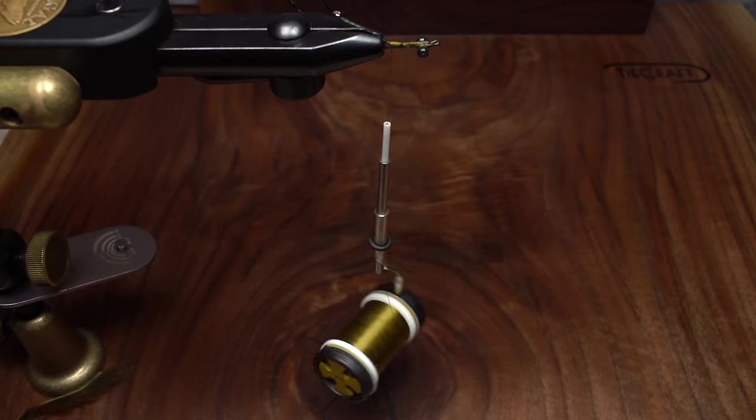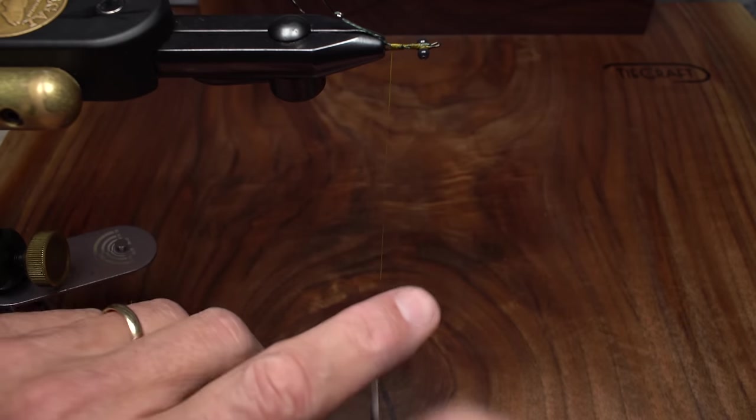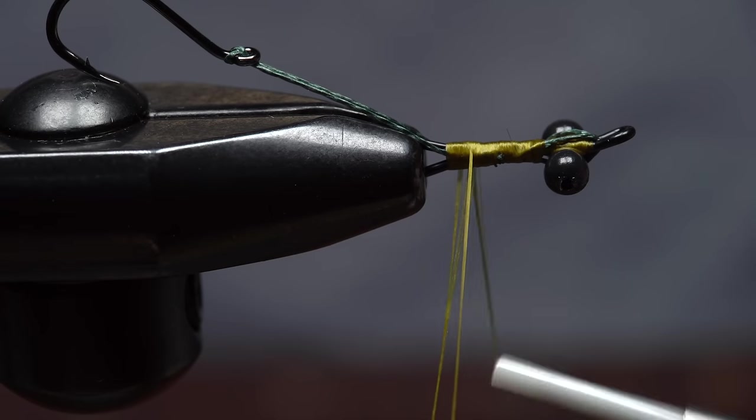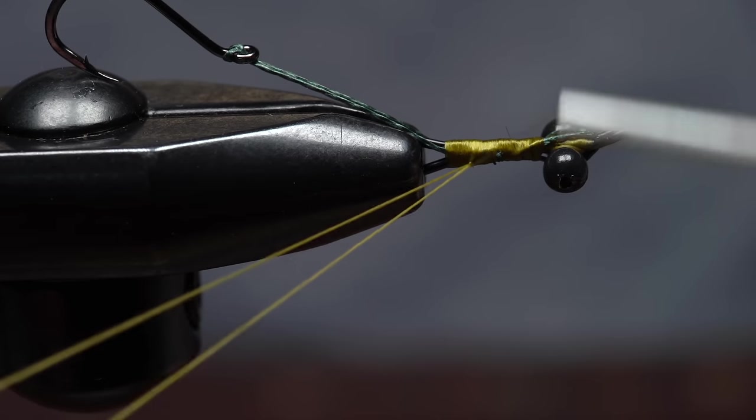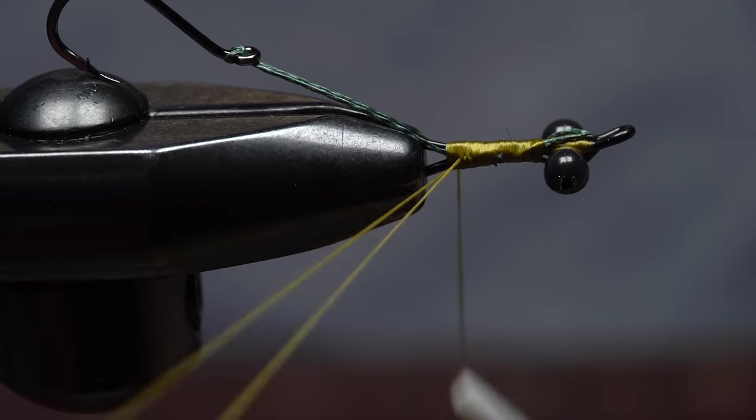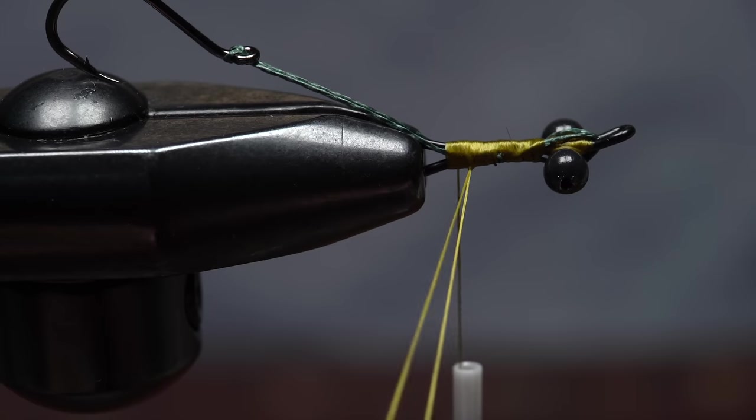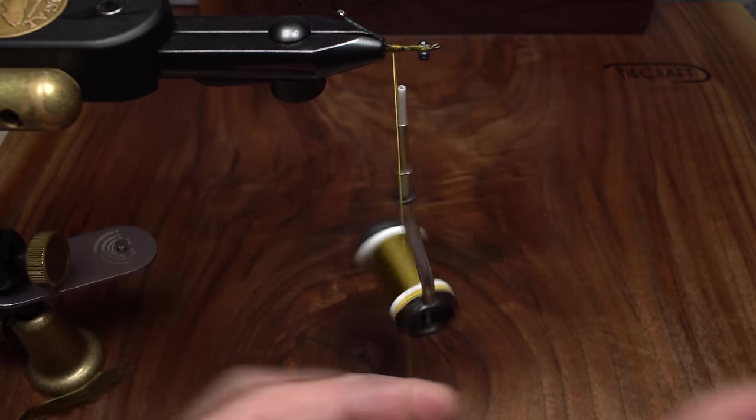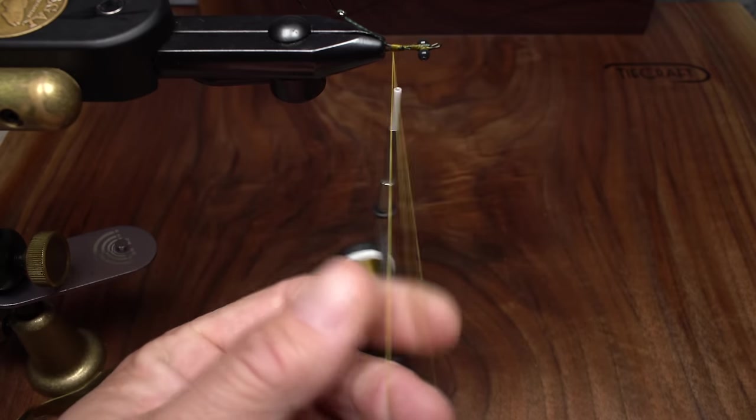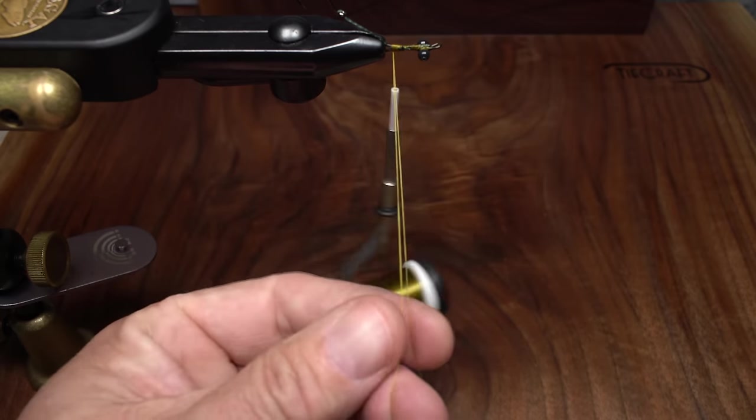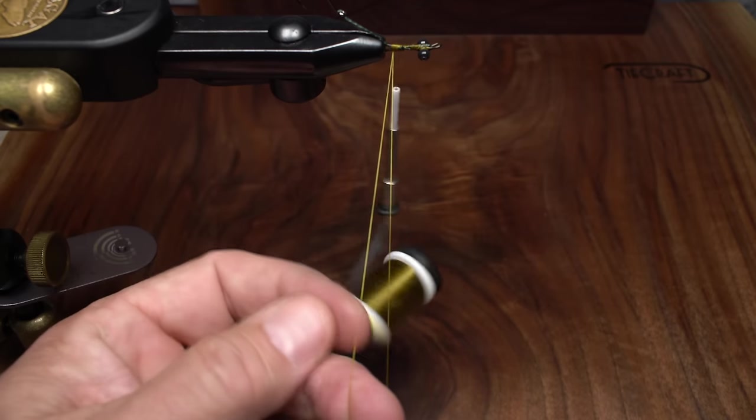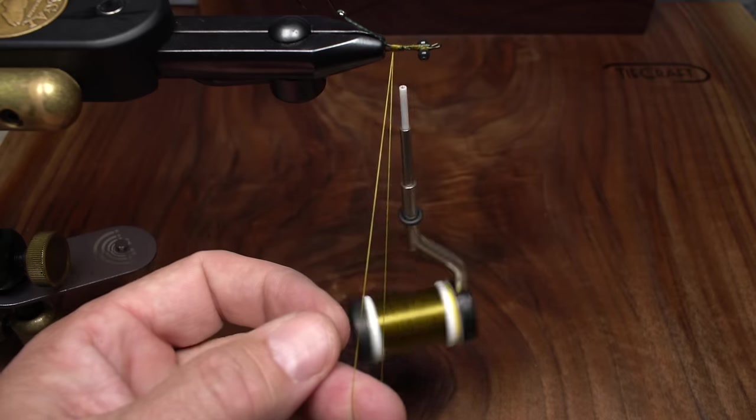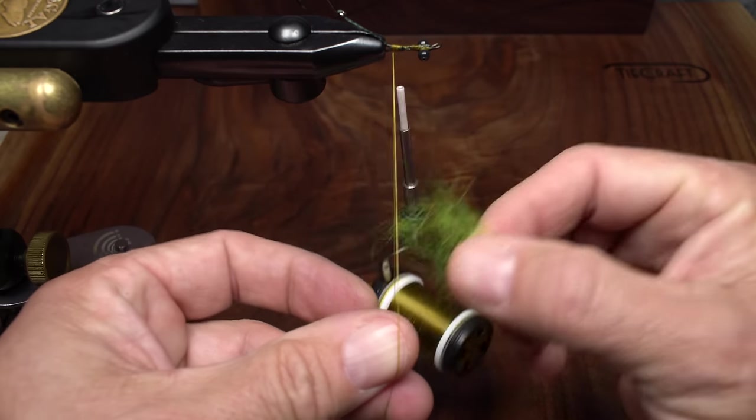Set the clump aside and pull down on your bobbin to expose about 6 inches of tying thread. Create a dubbing loop by first taking a wrap or two around the shank and then a wrap or two around both legs of the loop. You want the legs to come to a point on the shank. Insert the very tip of the middle finger of your left hand into the bottom of the loop and practice opening and closing the loop with your thumb and index finger. Insert the clump of dubbing between the thread strands then squeeze them together to hold the dubbing.